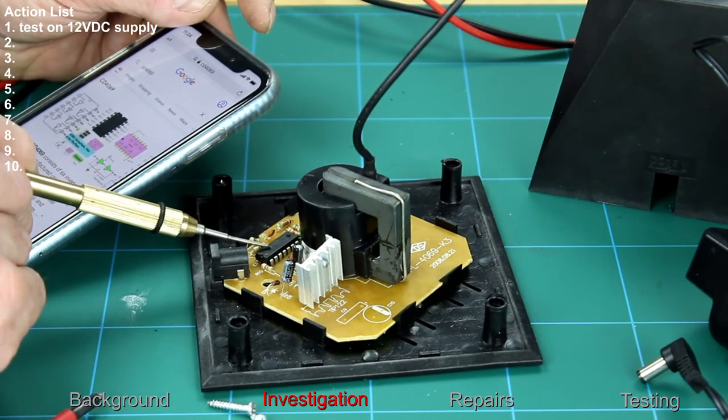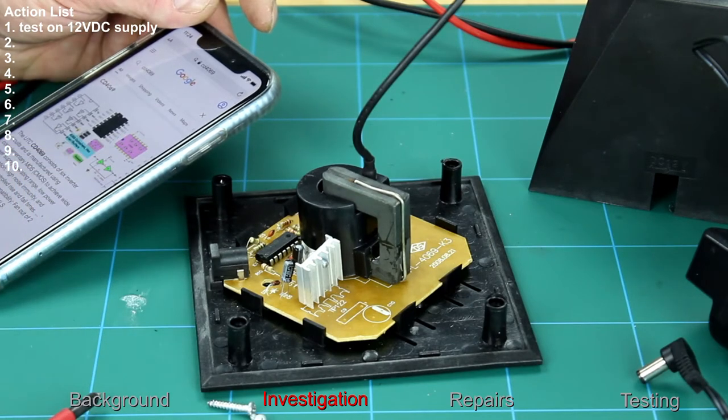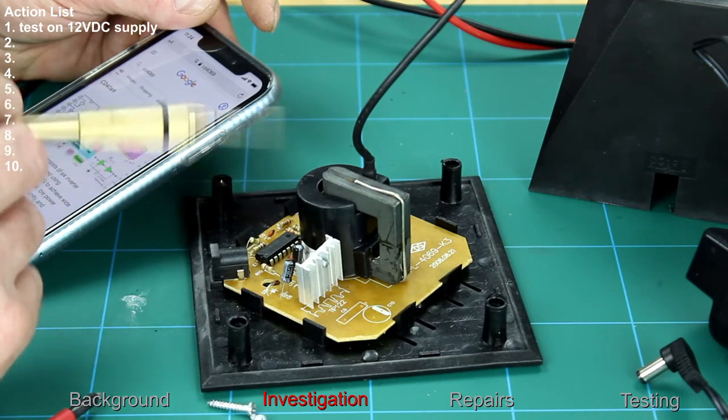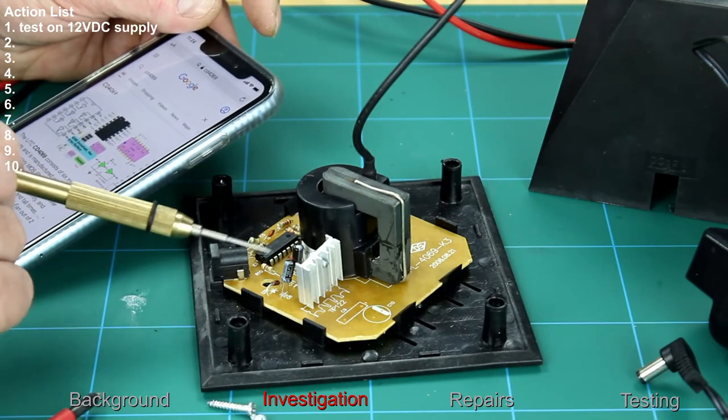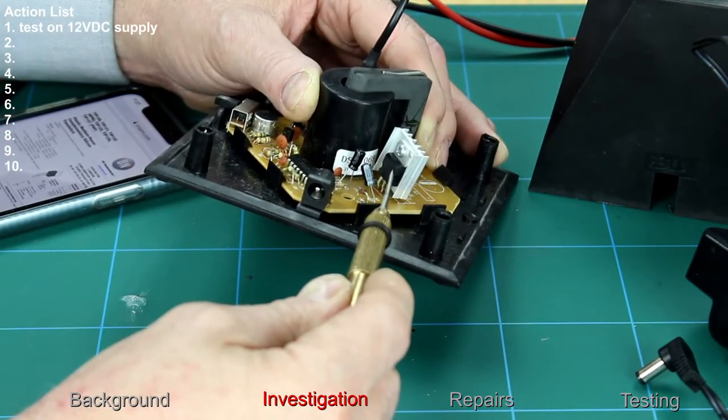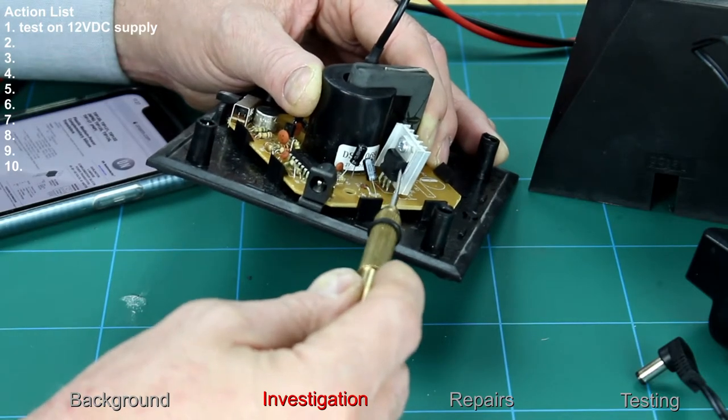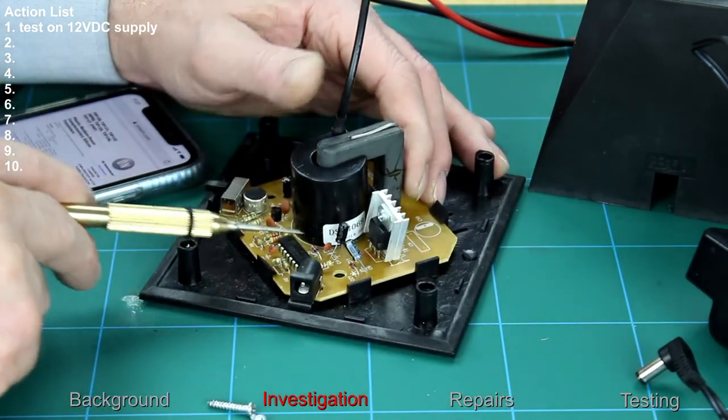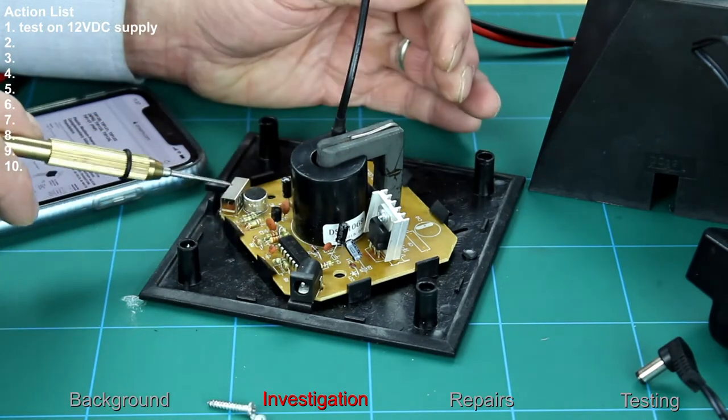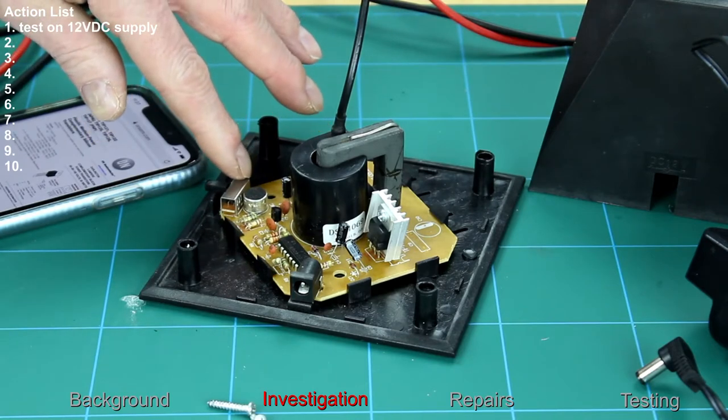We have a CD4069 chip here which is a 6 inverter circuit CMOS chip and this is the oscillator control circuit that does the switching at the high frequency. Also on the board the other main component is this TIP122 Darlington 5 amp complementary silicon power transistor. We have a few electrolytic capacitors, a transistor, a few resistors, a few diodes, and we have a microphone here that obviously controls the response with the audio function.